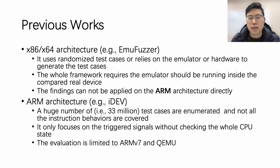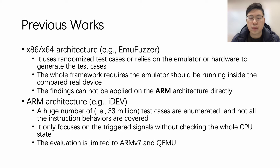Previous works provide some valuable insights but also have limitations. For example, AmiFarza, which targets x86 or x64 architecture, uses randomized test cases or relies on the emulator or hardware to generate test cases, so evaluation results may be biased. The framework also requires the emulator to run inside the compared real devices, which influences scalability, and its findings cannot be applied to ARM architecture directly. iDev studies semantic deviation issues in ARM architectures; however, it requires a huge number of test cases, influencing performance, not all instruction behaviors are covered, and it only focuses on triggered signals without checking the whole CPU state. The evaluation is also limited to ARMv7 and QEMU.